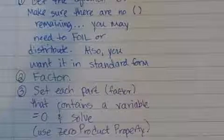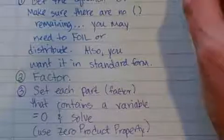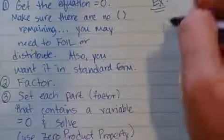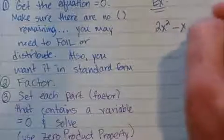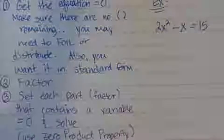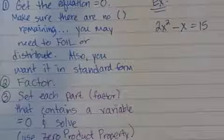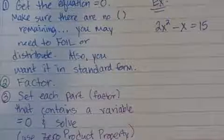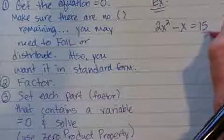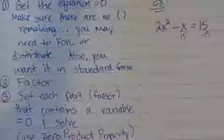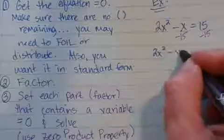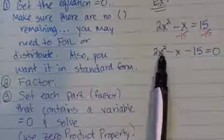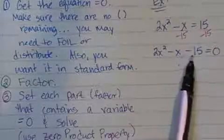Okay, so let's look at an example and we'll work this example here once you can see it. Let's start with 2x squared minus x equals 15. Step one says we have to get the equation equal to zero and make sure there's no parentheses. Also, we want that in standard form. Since this is not equal to zero yet, I'm going to go ahead and subtract 15 from both sides, which is going to leave me 2x squared minus x minus 15 equals zero. I don't have any parentheses and this is in standard form because it goes from x squared to x to the constant term.